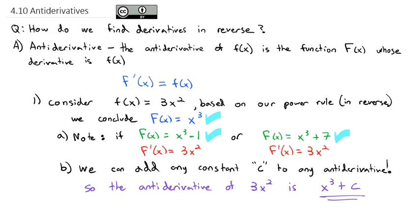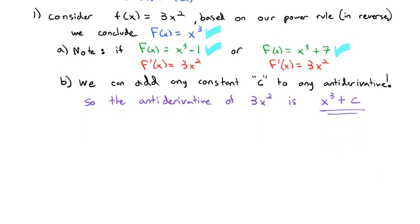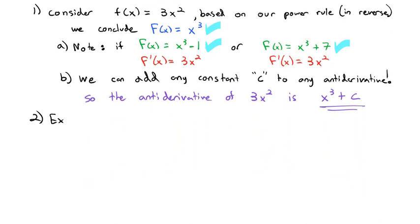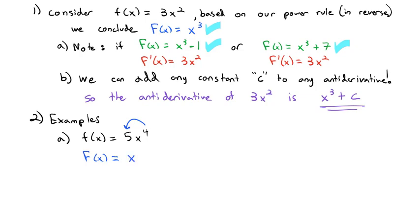Let's use what we know about derivatives and apply those rules in reverse with a few examples. Let's say f of x equals 5x to the fourth. With the power rule, the exponent moves out front and reduces by 1. So working in reverse, capital F of x, the anti-derivative, must be x to the fifth plus any constant c.